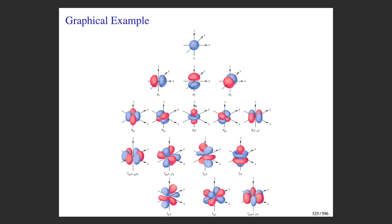For the dz² orbital it's trickier — instead of nodal planes there are nodal cones. There's a positive amplitude in the donut shape and negative amplitude in the top and bottom lobes. One nodal cone encapsulates the upper negative lobe and a second nodal cone encapsulates the lower one. For the f orbitals, which I'll call jelly beans, you can find three nodal planes in each picture, oriented in different ways with respect to x, y, and z.